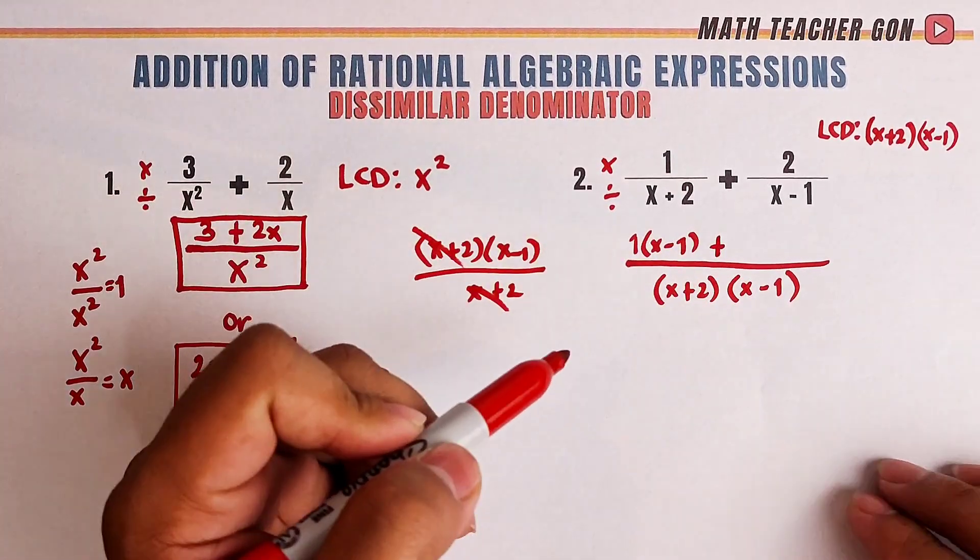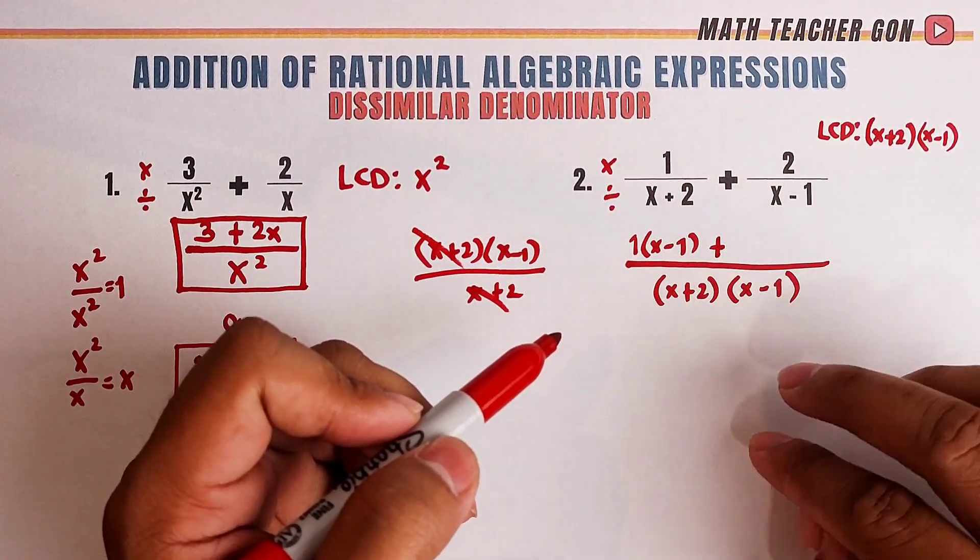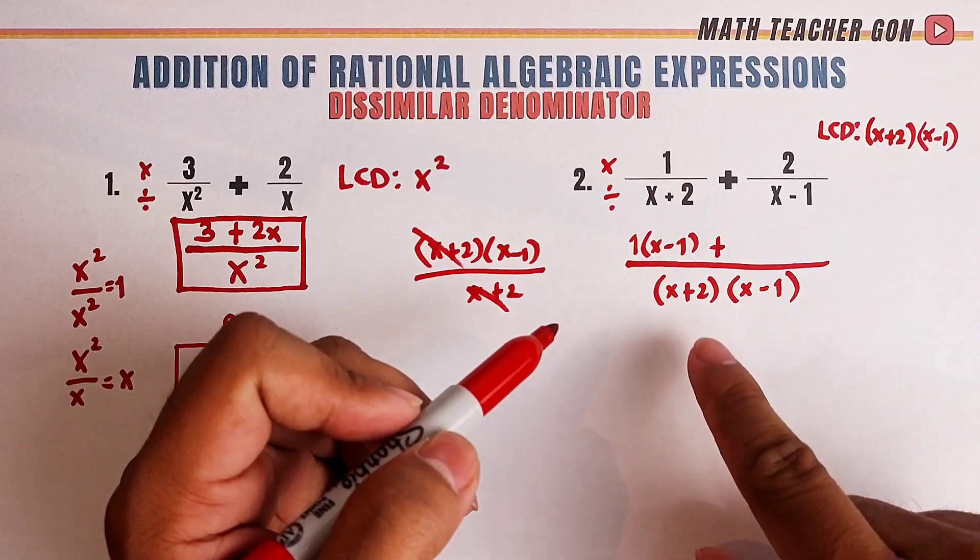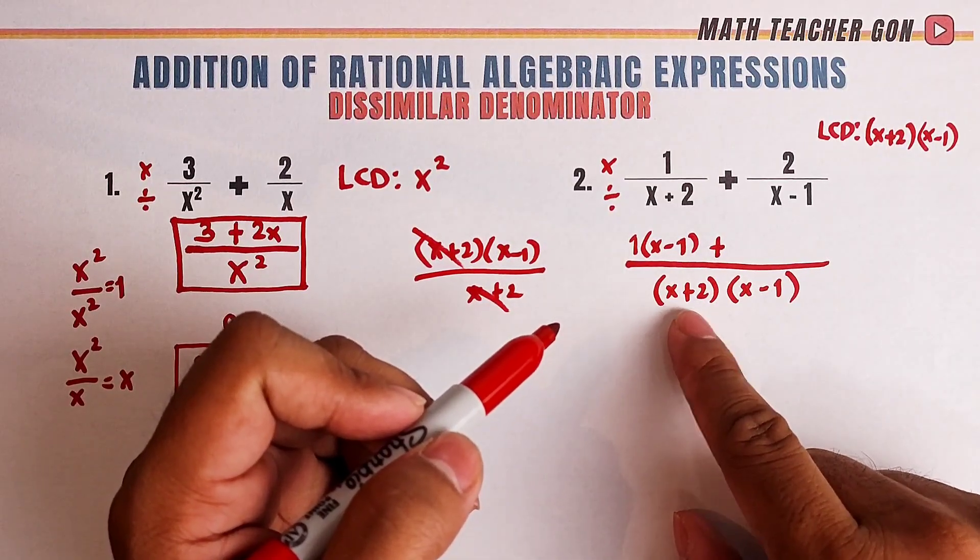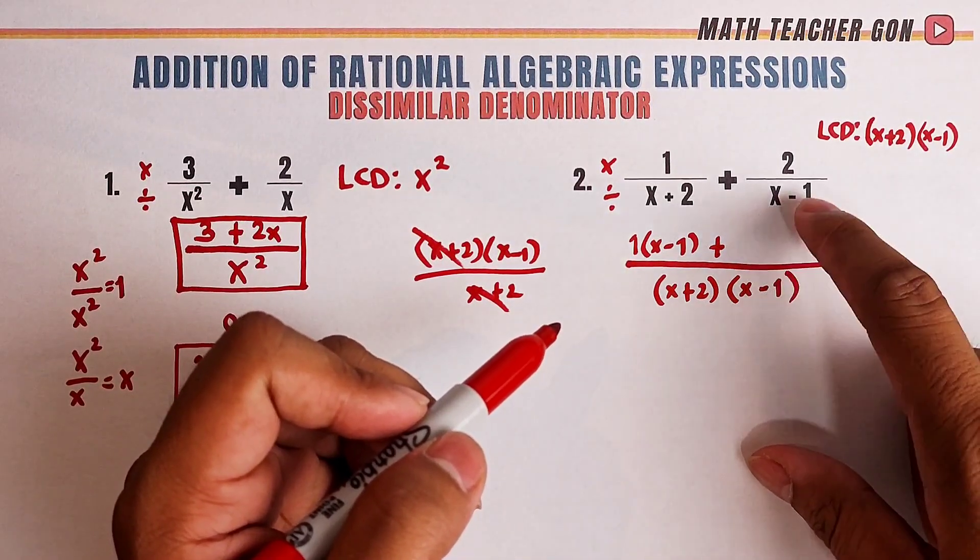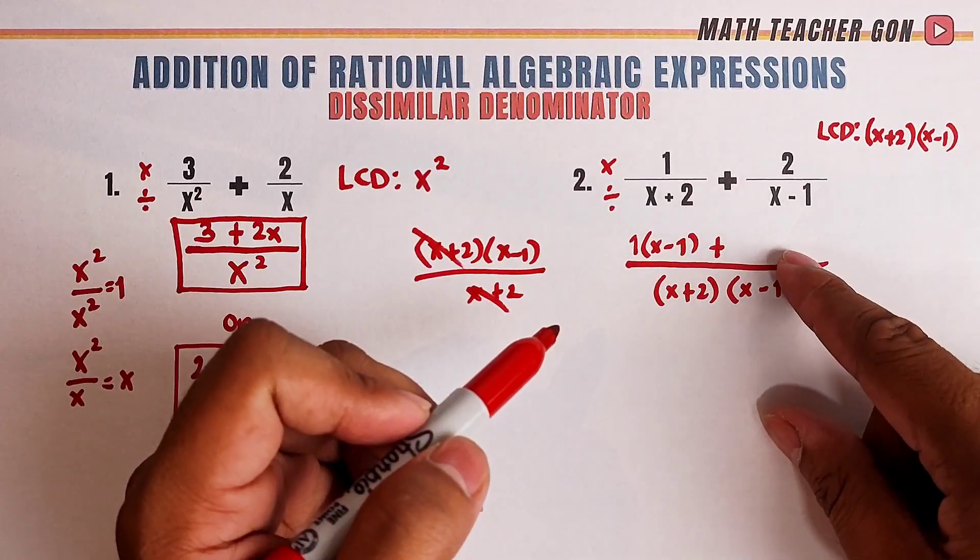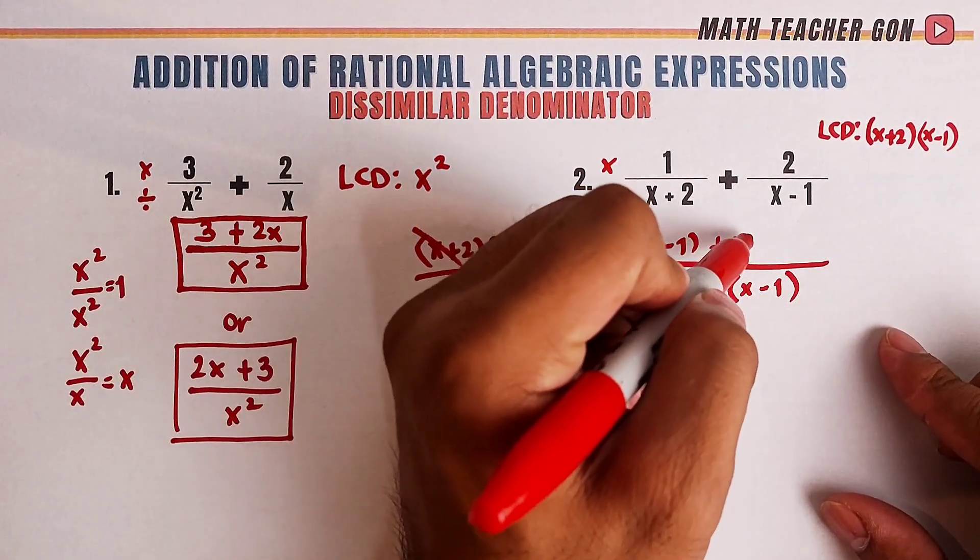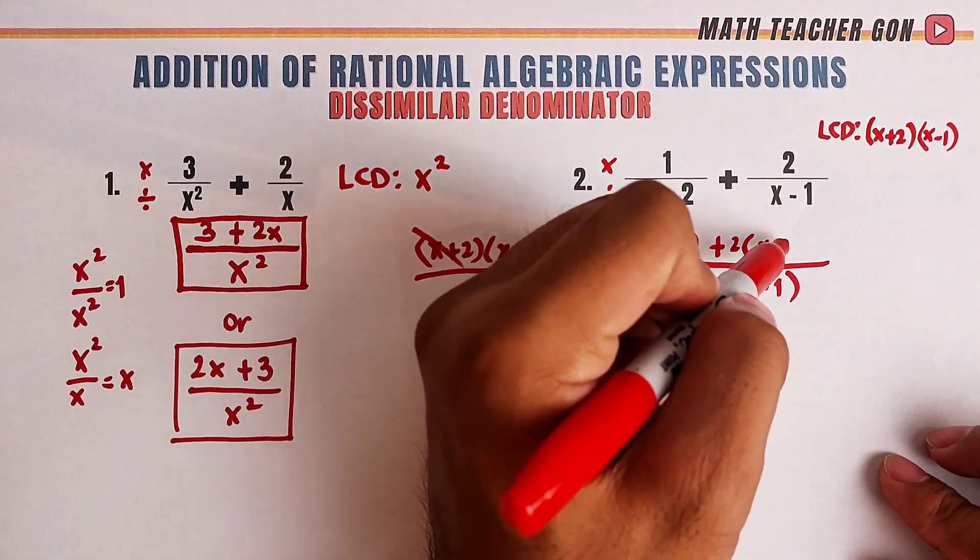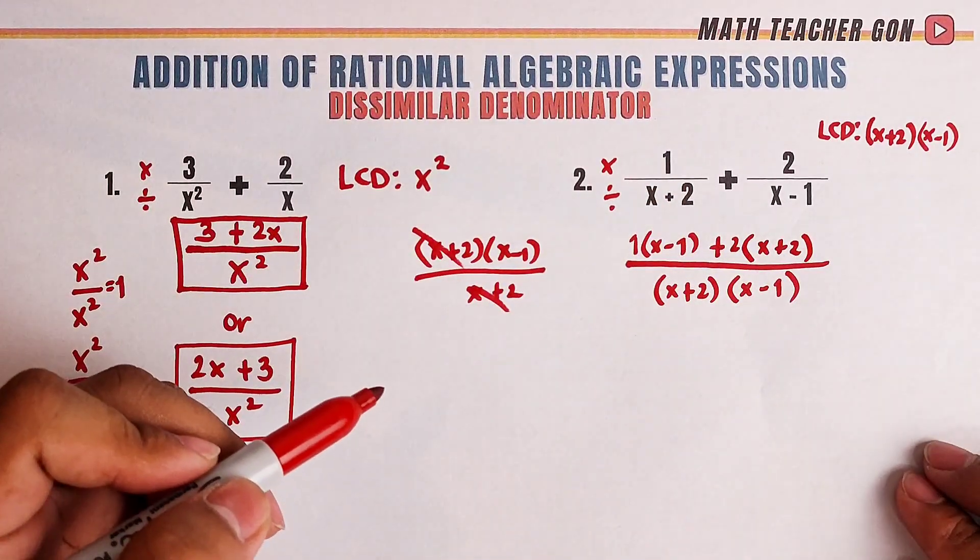Next, plus. For this one, the tendency is that it just cancels out. So, x plus 2 times x minus 1 divided by x minus 1. These will cancel. What remains is 2 times x plus 2.